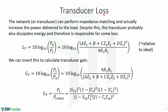Now we will take a look at transducer loss. The network or transducer can perform impedance matching and actually increase the power delivered to the load. However, the transducer probably also dissipates energy and therefore is also responsible for some losses. Here, transducer loss is given by LT, which is equal to 10 log base 10 of the power available from the source over the power delivered to the load, and is also given by this expression.